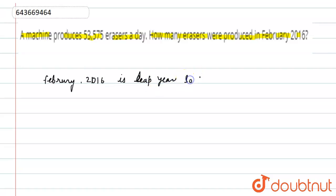So the total number of days in February will be equal to 29.